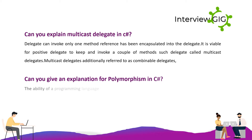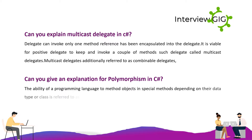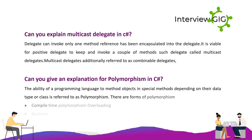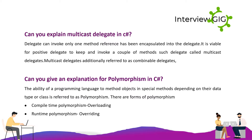What is polymorphism in C#? The ability of a programming language to process objects and methods differently depending on their data type or class is referred to as polymorphism. There are two forms of polymorphism: compile-time polymorphism, achieved through overloading, and runtime polymorphism, achieved through overriding.